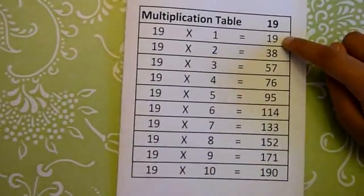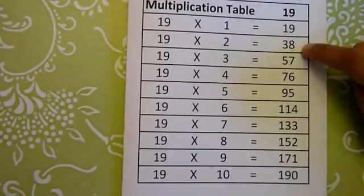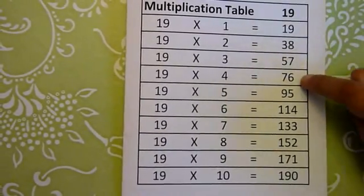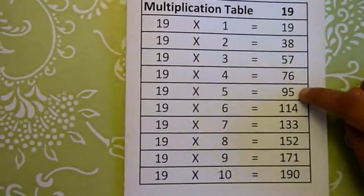we'll go to multiplication table 19. 19 ones are 19, 19 twos are 38, 19 threes are 57, 19 fours are 76, 19 fives are 95.